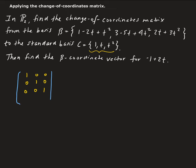For beta, the first vector is going to be one, minus two, one. The second one we have three, negative five, four. And then for the third one, we have zero, two, then three.